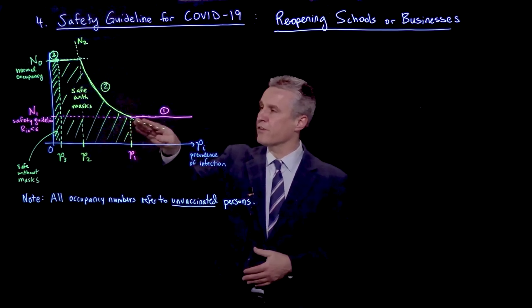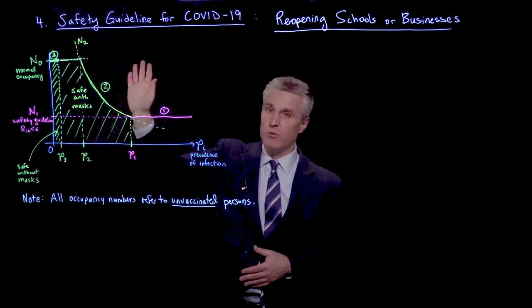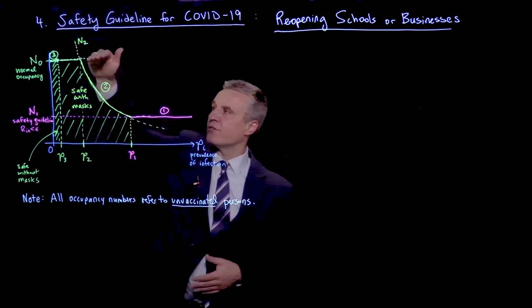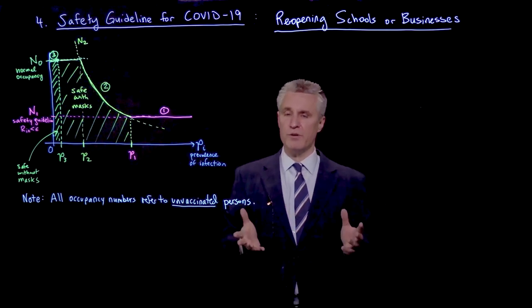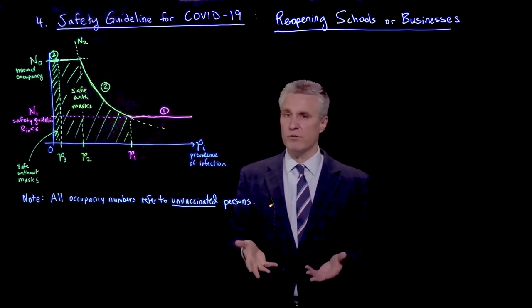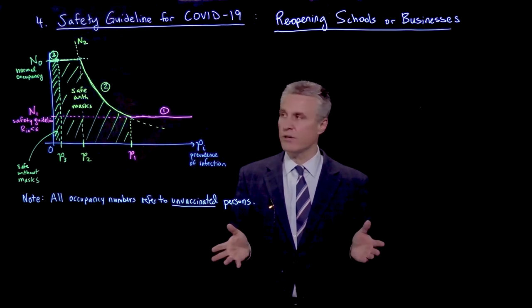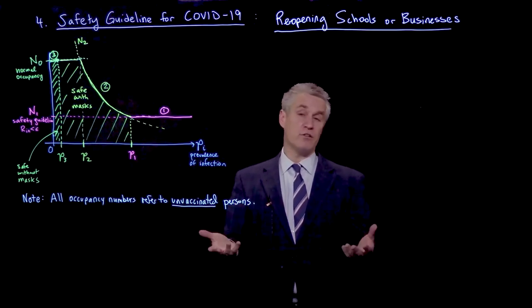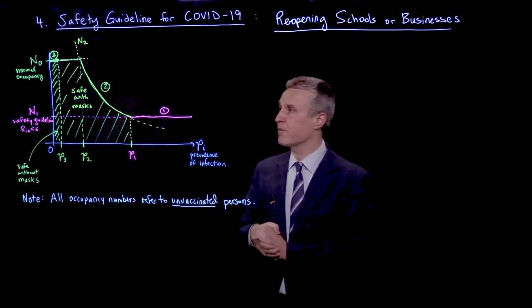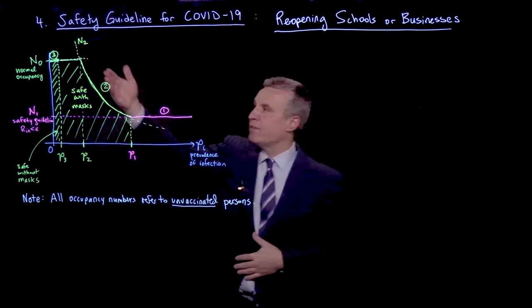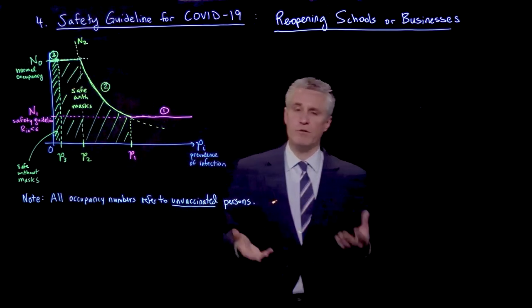So there's a certain point, P1, where we start to say, you know what, we can actually increase the occupancy of the space with everything else held fixed while still wearing masks. And then we hit the normal occupancy. And you might call that kind of the new normal, where we're going about our business. The room is filled with the typical number of people. Let's say the classroom is back to its normal size. We don't have any remote teaching going on, but we're wearing masks, or taking other factors into account, such as higher ventilation rates, let's say, open windows.